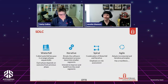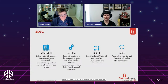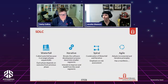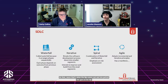Spiral is kind of a combination of Waterfall and Iterative — each thing is dependent on the thing before it, but it's also broken up into smaller tasks. And then there's Agile, which is probably the most widely used one for a lot of different reasons.